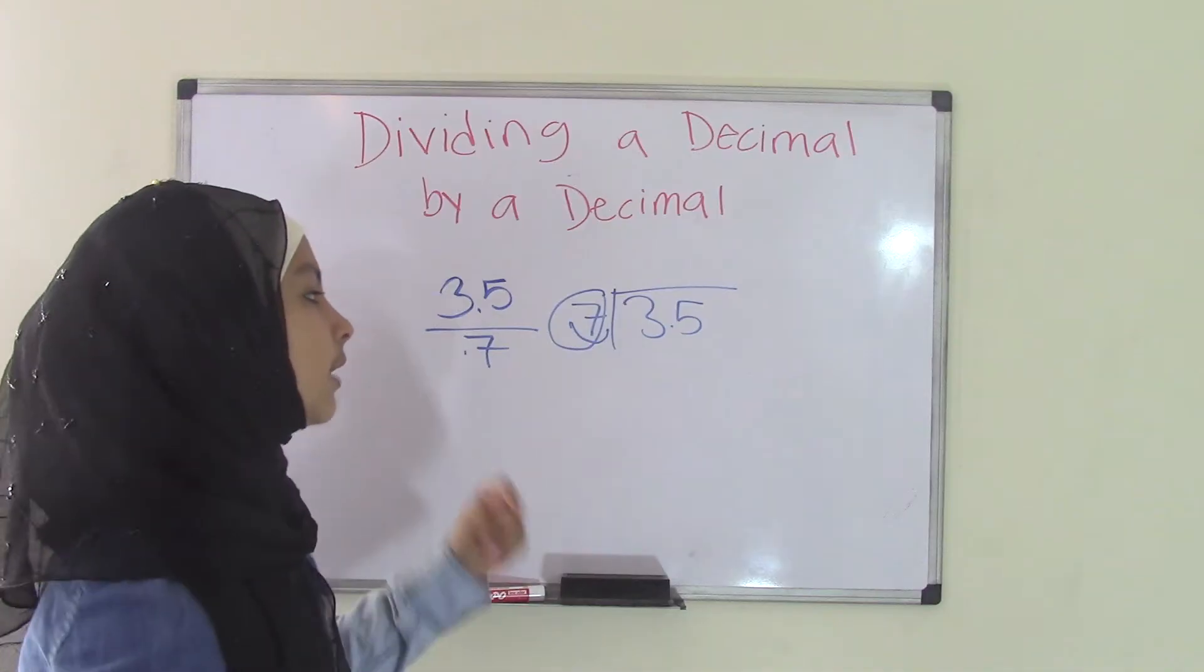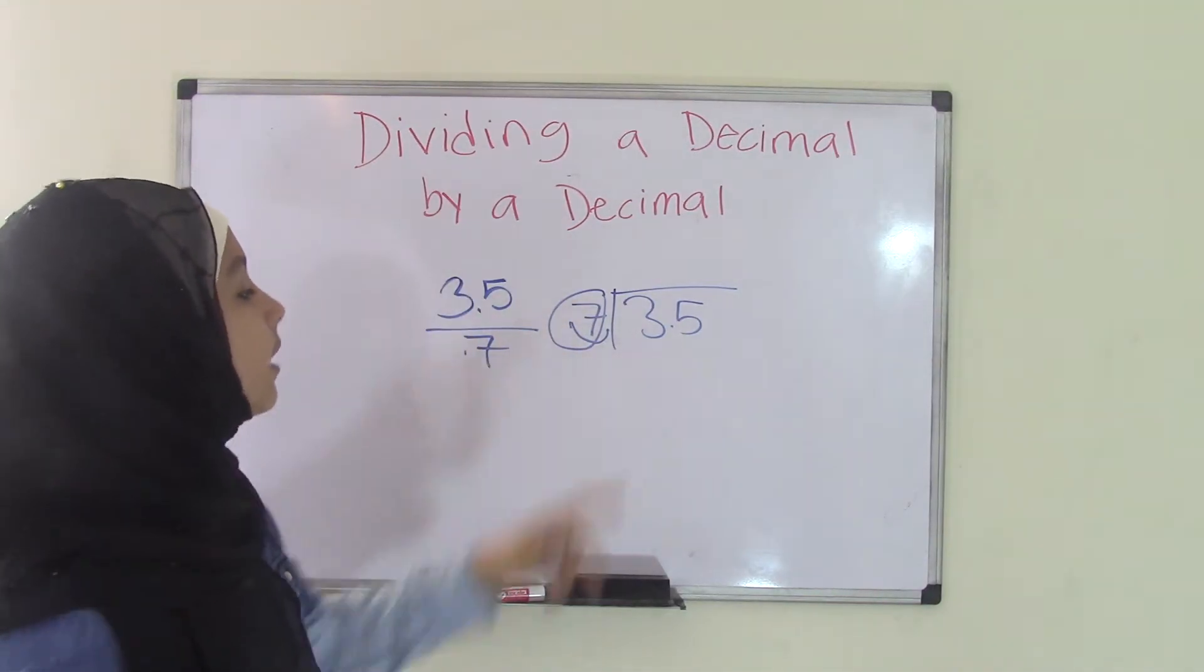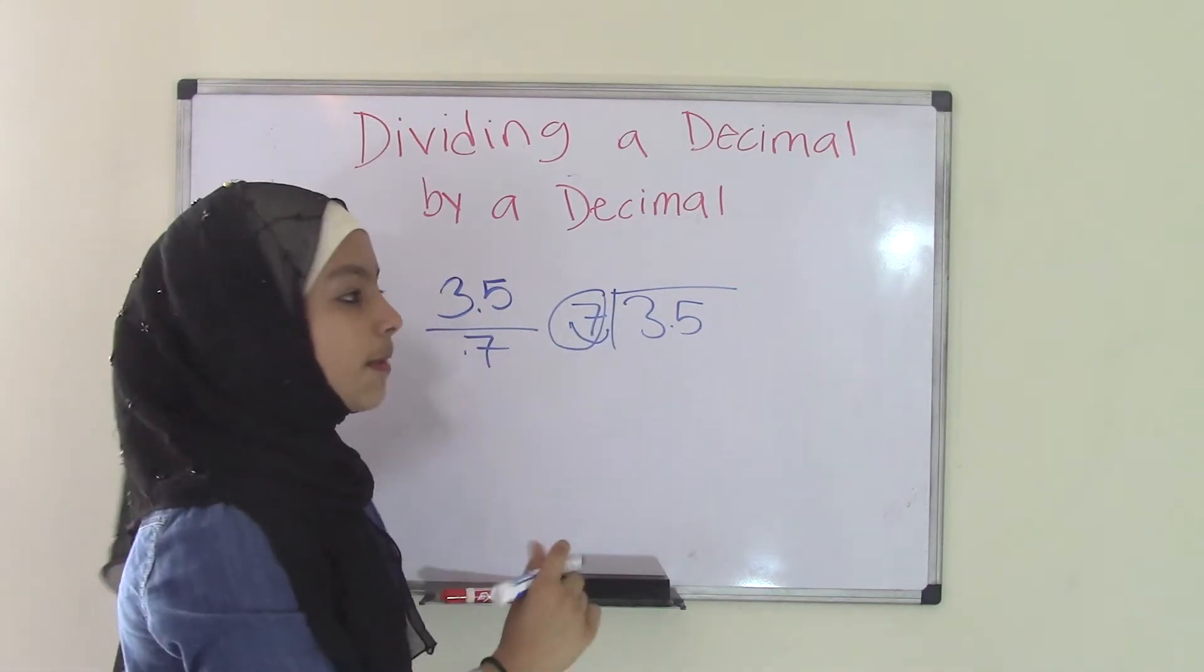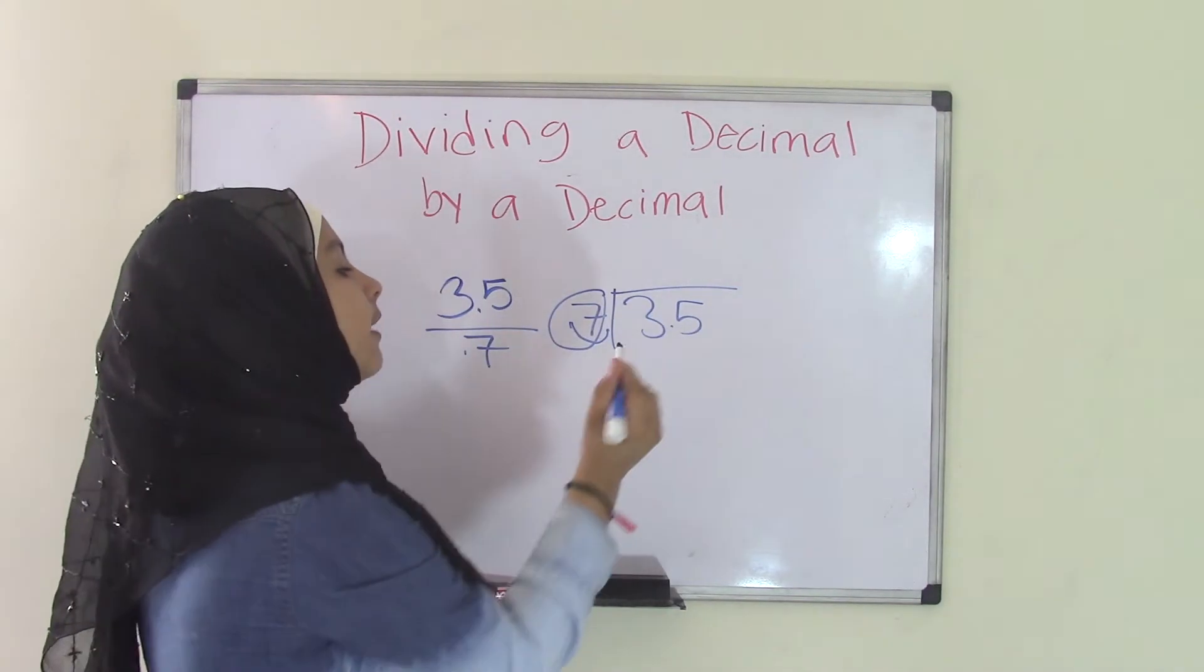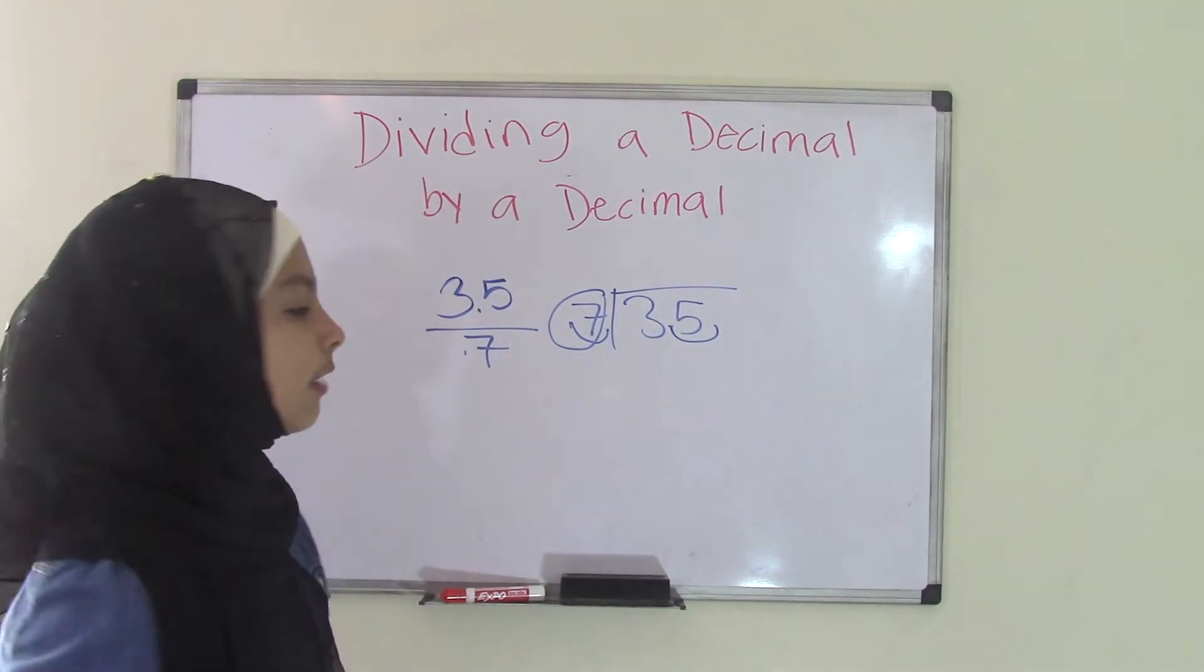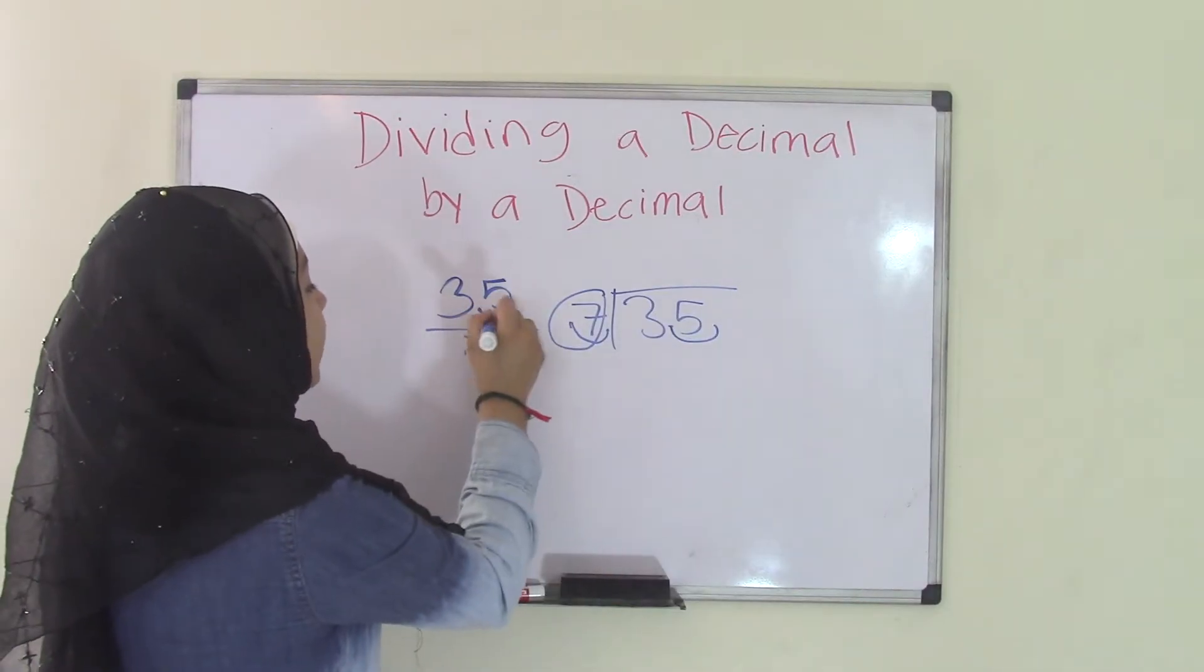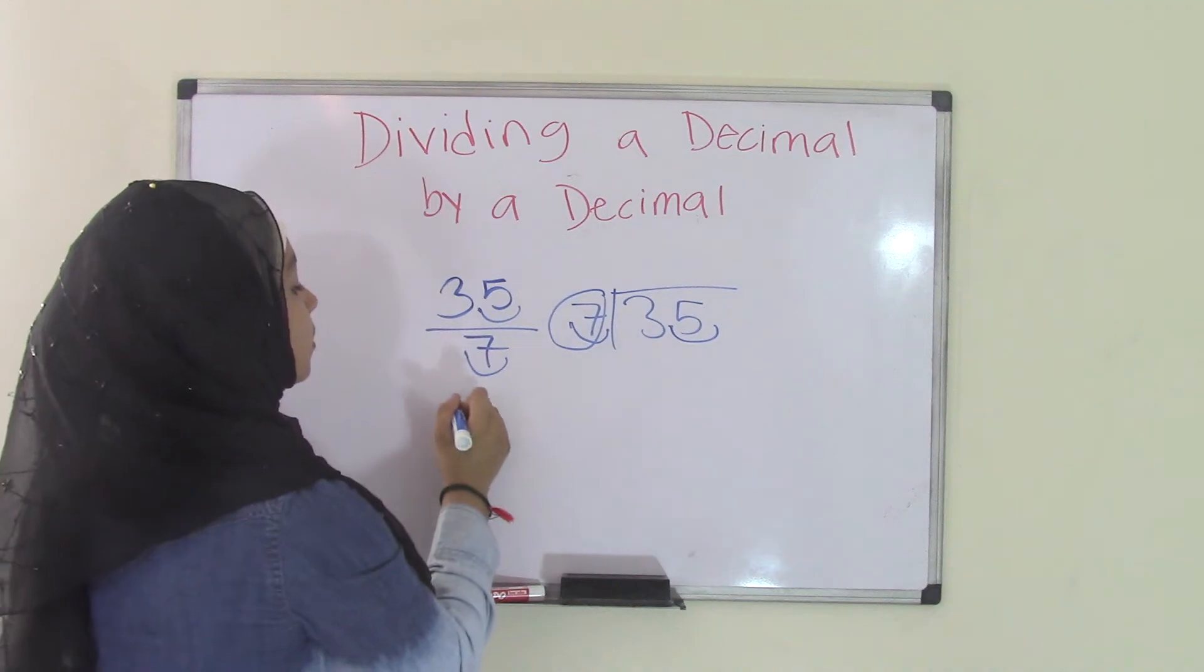Now you have to do the same thing that you did to the divisor to your dividend. So since you moved it only one space from left to right, you're going to move the decimal point in your dividend from left to right one space. So that would become a 35. Now you have 35 divided by 7. So if we have 35 divided by 7 we know that 35 divided by 7 equals 5.